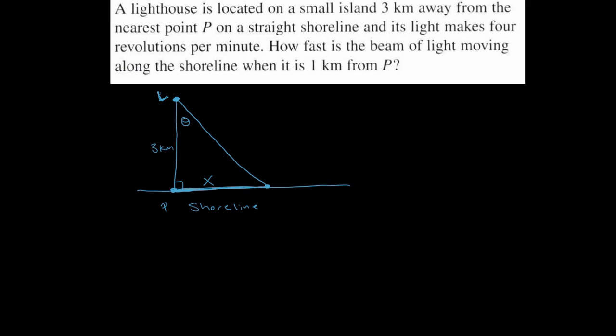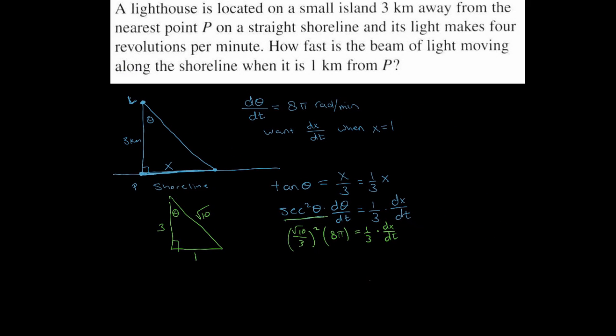Okay, and now to solve, I'm just going to multiply through by three. Simplify a little bit here—so if you multiply through by three, you get 3 times root 10 over 3 squared is 10 over 9, times 8π, and that's dx/dt. So just punching this into the calculator, or even doing it by hand, it's not so bad—you get dx/dt equals 80π over 3.